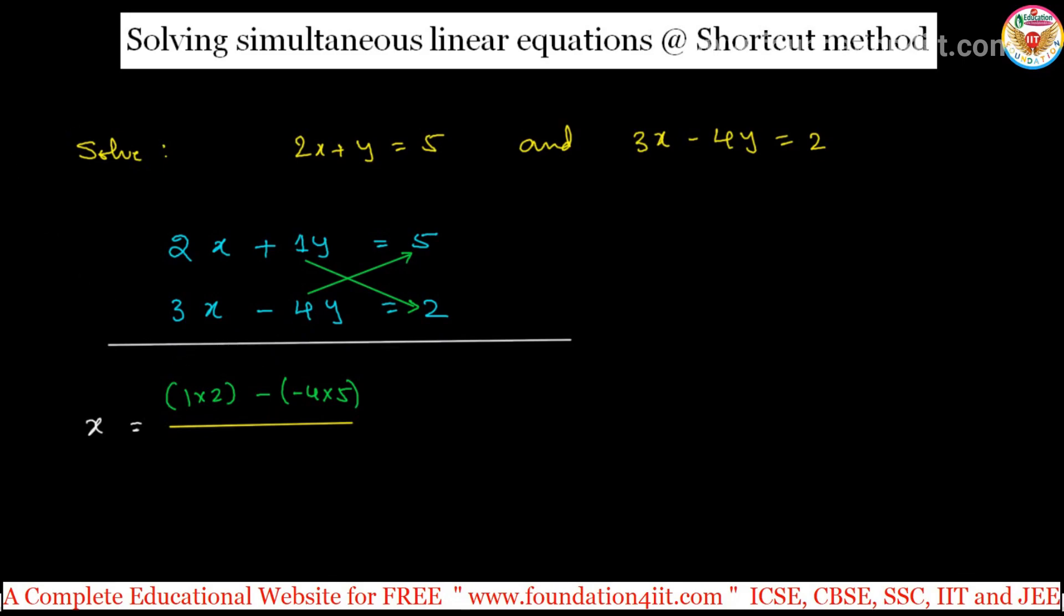Next, when you come to the denominator, same with 1, this side. These two you multiply, again these two you can cross multiply. Always you will start with this only. 1 into 3 minus these both, cross way multiplying, again 2 into minus 4 or minus 4 into 2. Just if we simplify, you will get x value, simple.